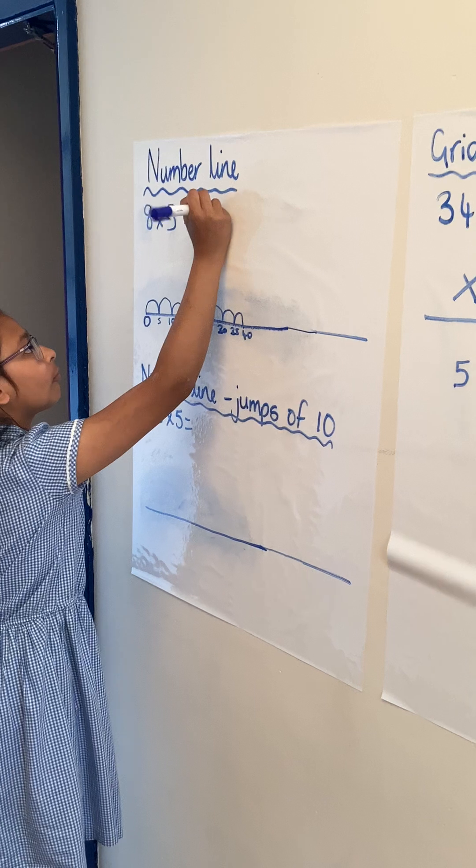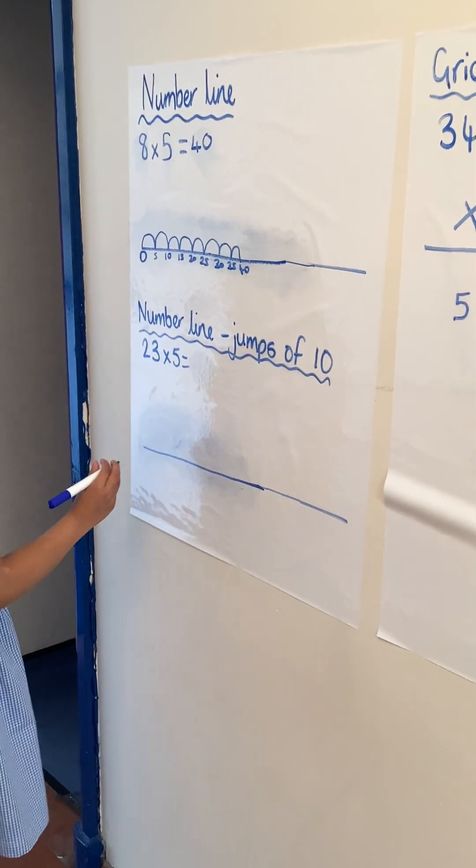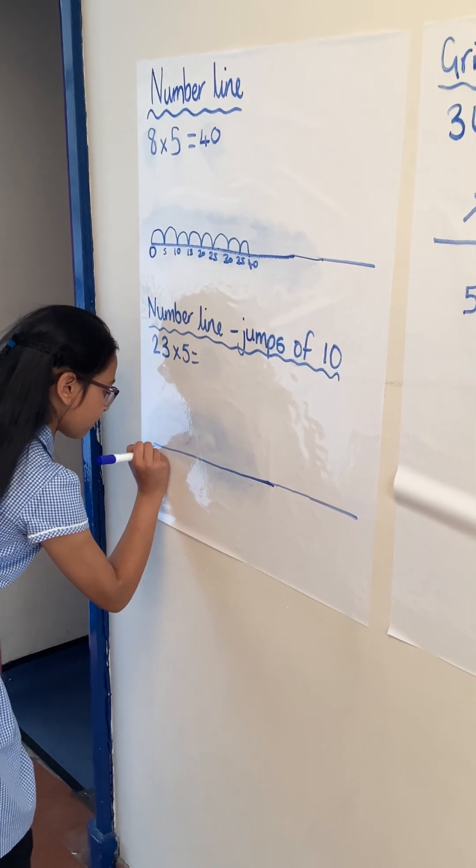We're then going to move on to number lines with jumps of 10, so 23 times by 5. So we always start with a 0.